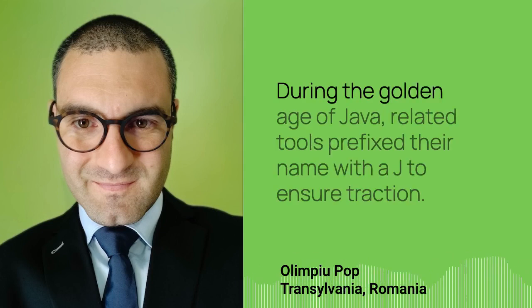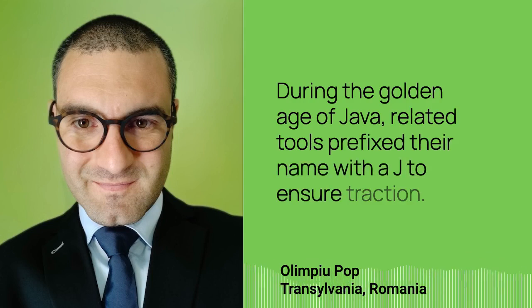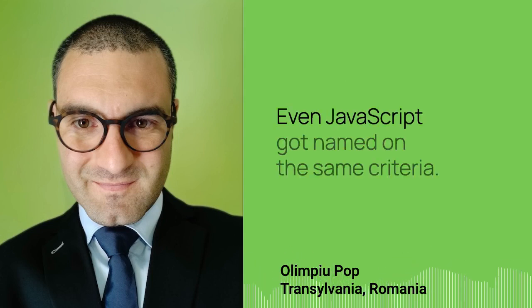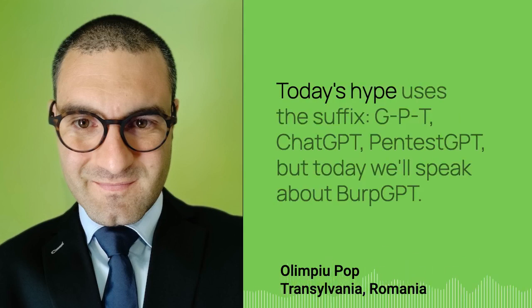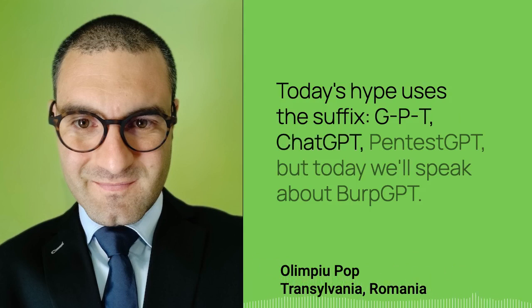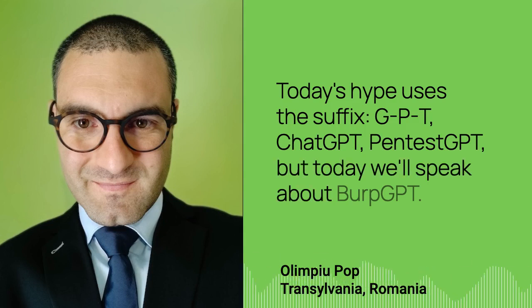During the golden age of Java, related tools prefixed their name with a J to ensure traction. Even JavaScript got named on the same criteria. Today's hype uses a suffix GPT — ChatGPT, PentestGPT — but today we will speak about BurpGPT.